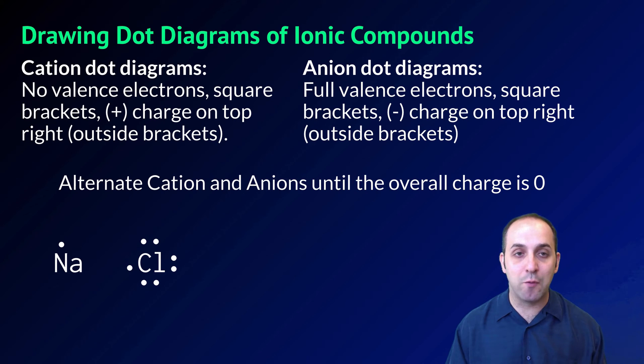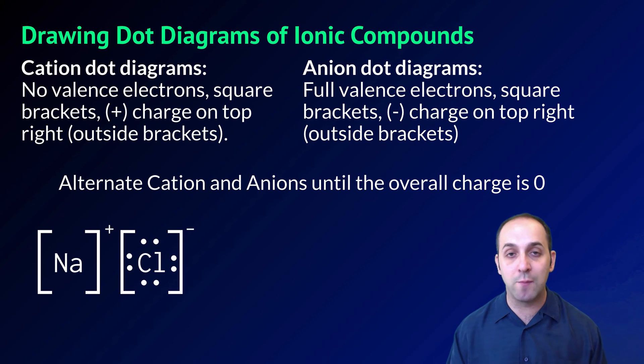To look at our sodium and chlorine example, once we transfer the electron from sodium to chlorine, we're going to put square brackets around sodium and square brackets around chloride, a positive charge outside of sodium, and a negative charge outside of chloride. Does this make sense? If it doesn't, take a moment and write down any questions that you have, and then let's move on.